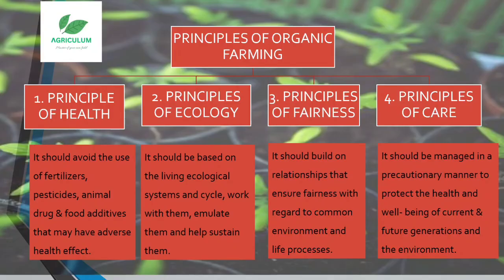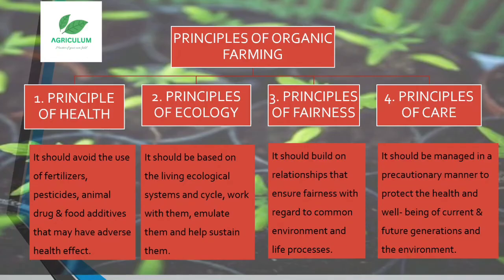The next topic is the principles of organic farming. The first is the principle of health — it should avoid the use of fertilizers, pesticides, animal drugs, and food additives that may have adverse health effects. The second is the principle of ecology — it should be based on living ecological systems and cycles, working with, emulating, and helping to sustain them. The third is the principle of fairness — it should build on relationships that ensure fairness with regard to the common environment and life processes. The fourth is the principle of care — agriculture should be managed in a precautionary manner to protect the health and well-being of current and future generations and the environment.